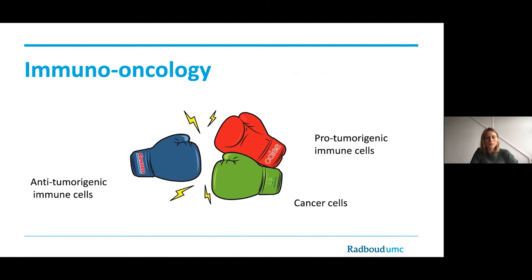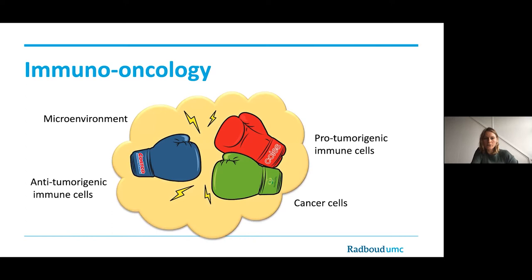Looking in a bit more detail, there are actually four key players. There are the cancer cells, and then there are different types of immune cells: anti-tumorigenic immune cells and pro-tumorigenic immune cells. The anti-tumorigenic immune cells are trying to kill the cancer cells, while the pro-tumorigenic immune cells are helping the cancer cells to survive. And then there's a fourth very important element: the tumor microenvironment, which can lead to activation or dampening of the immune response.